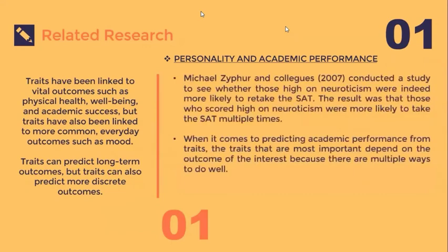Michael Ziffer and colleagues in 2007 conducted a study on whether those high on neuroticism were more likely to retake the SAT. The result was that those who scored high on neuroticism were more likely to take the SAT multiple times, and scores tended to increase over time. When it comes to predicting academic performance from traits, conscientiousness is good for GPA but not as important for the SAT, openness is great for verbal ability, and neuroticism is associated with retaking tasks and doing better each time.